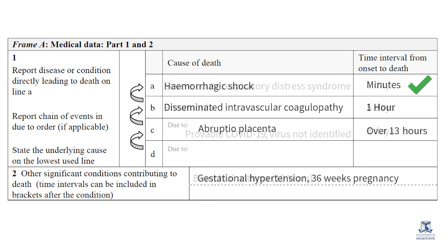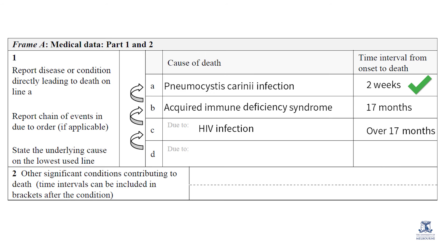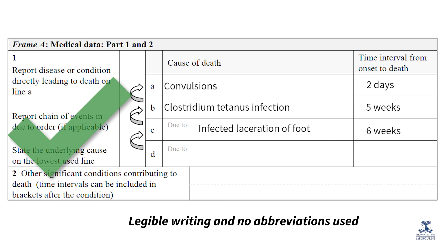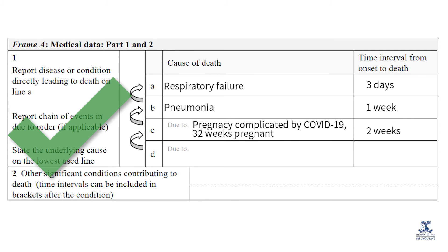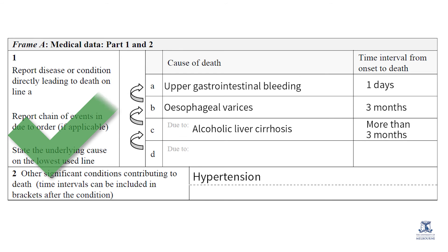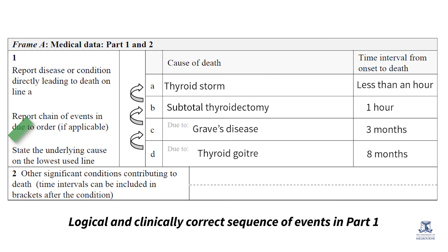Look at these examples. Write legibly and ensure that no abbreviations are used to represent medical conditions. Check whether the sequence of events in Part 1 is logical and clinically correct. As mentioned previously, when the sequence is correct, the time intervals will be in an ascending order from line 1A downwards.